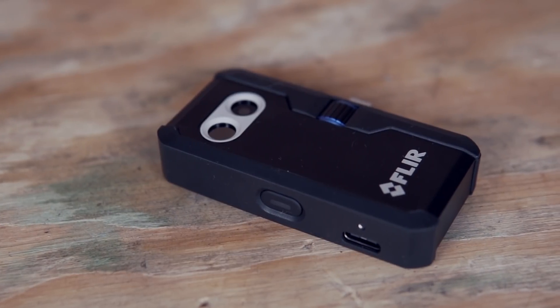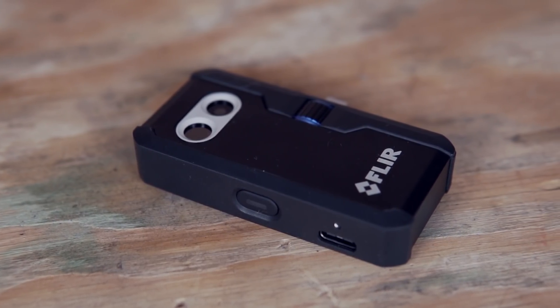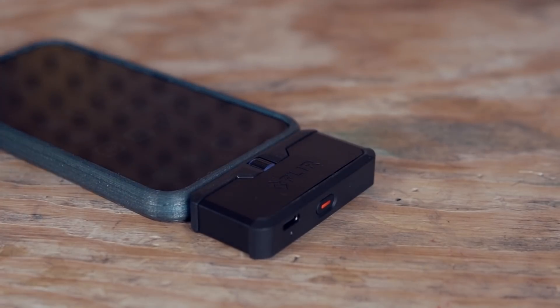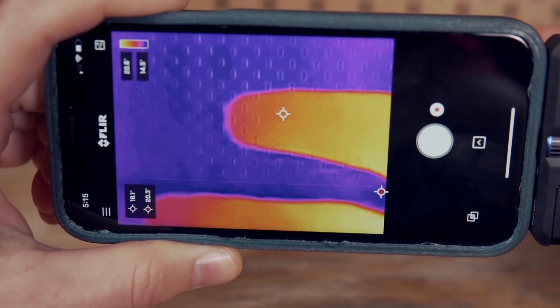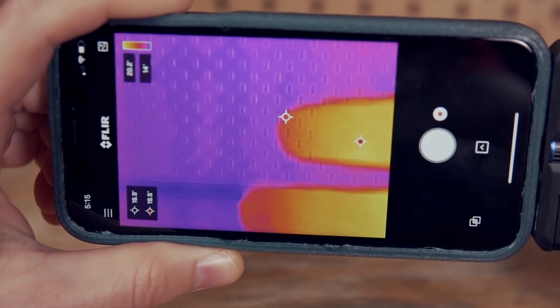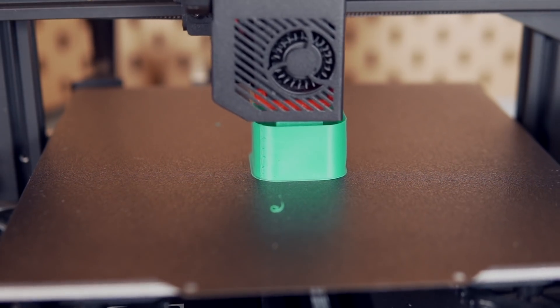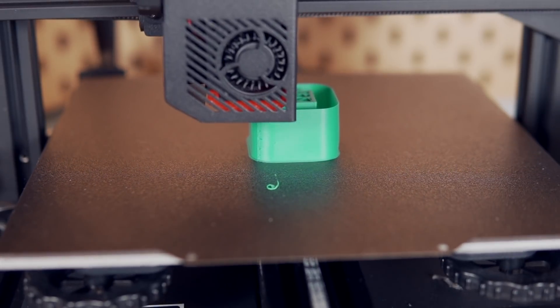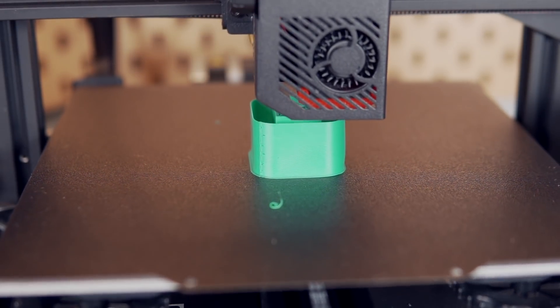Today, we're going to be using the FLIR cam that I recently picked up to see if we're actually able to visualize the shrinking and warping happening with a printed part. After that, we'll take a look at draft shields, apply them to our part, and print again to see what sort of effect they have on its ability to retain heat. So with all that being said, and without further ado, let's get right into today's video.